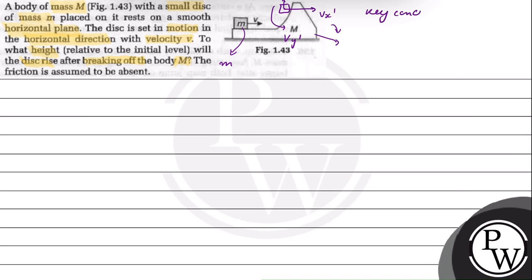The key concepts are conservation of linear momentum, because the net external force is zero, and conservation of energy, because the system is working in the field of gravity.